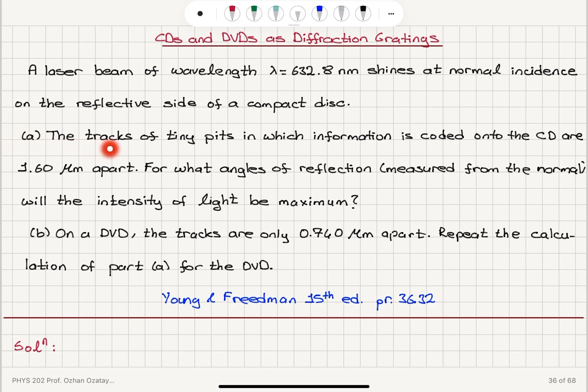Part A: the tracks of tiny pits in which information is coded onto the CD are 1.6 micrometers apart. For what angles of reflection measured from the normal will the intensity of light be maximum?